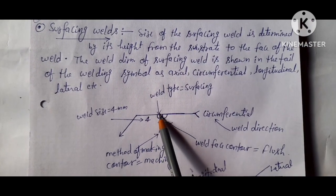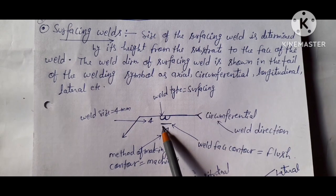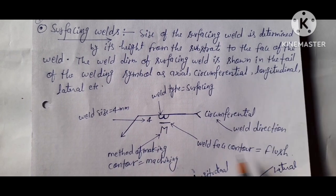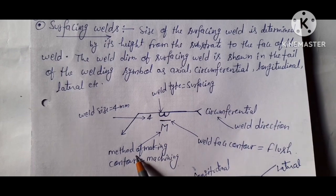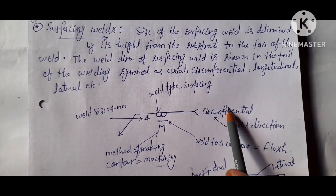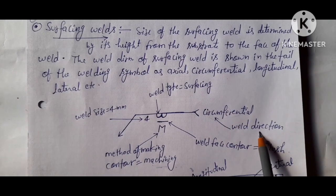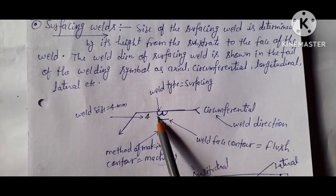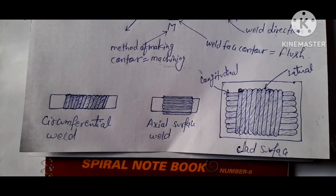So this is a surfacing weld symbol. Surfacing, this is a weld face contour, plus or flat. M is denoted as machining contour, like machining, and the tail is having their detail. Circumferential weld direction is given, and this is a four weld size surfacing weld symbol issue in this diagram.